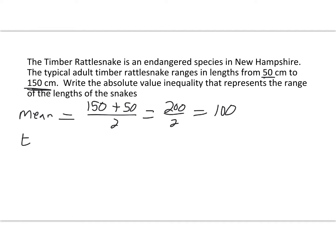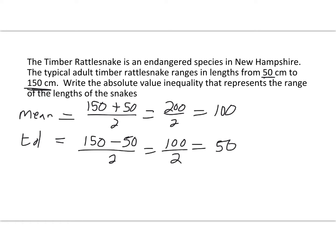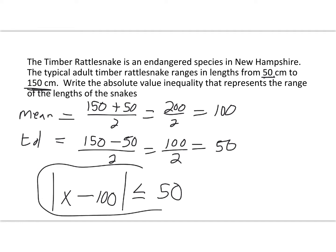So the mean is 100. Now for the tolerance: 150 minus 50 divided by 2 gives us 100 divided by 2, which is 50. Putting it all together, the absolute value of x minus 100 is going to be less than or equal to 50, because we're doing a range between 50 and 150 with a tolerance of 50 units. There is your absolute value — pretty simple once you get the gist of what's going on.